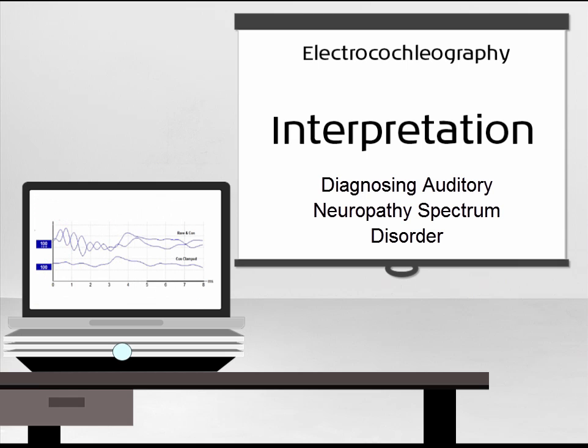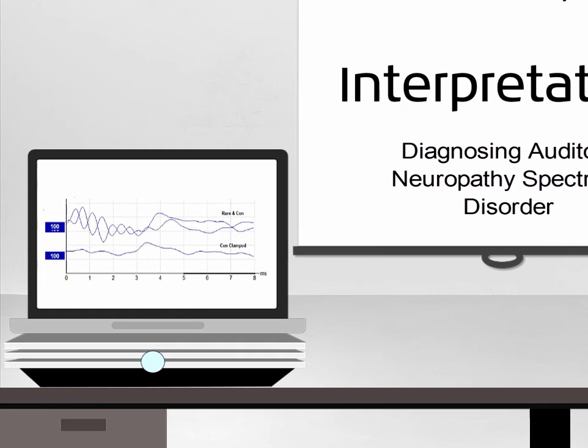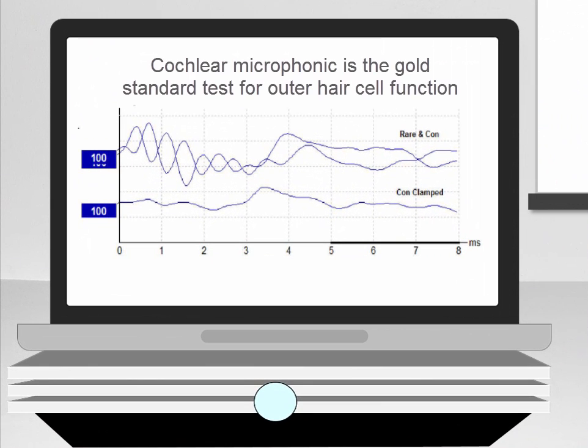Electrocochleography can also play an important role in diagnosing auditory neuropathy spectrum disorder as the cochlear microphonic is the gold standard test for outer hair cell function. The presence of a cochlear microphonic in combination with a grossly abnormal or absent ABR can be used to confirm this condition.